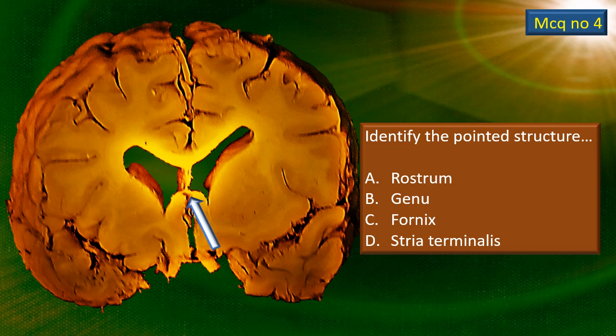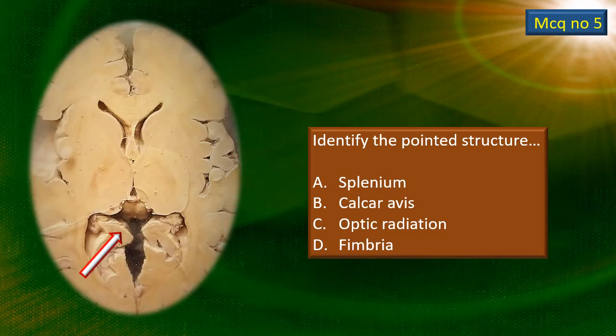MCQ number 4. This is yet another coronal section, slightly posterior to the previous coronal section. Identify the pointed structure. Last MCQ — yet another photograph of a horizontal section of the cerebrum, probably at a lower level than the interventricular foramen. There is a very prominent structure marked by that arrow. Identify that particular structure.